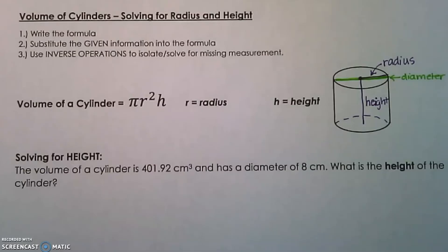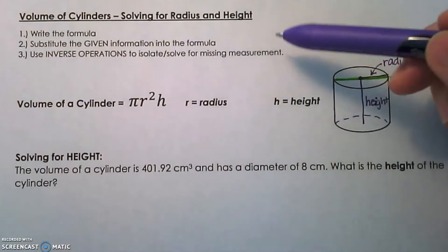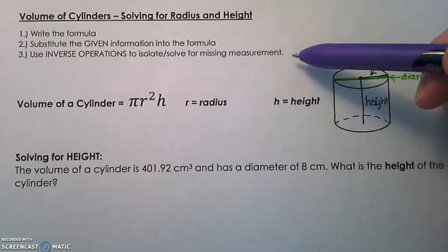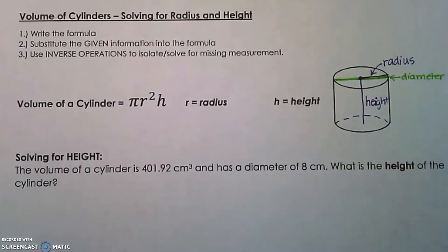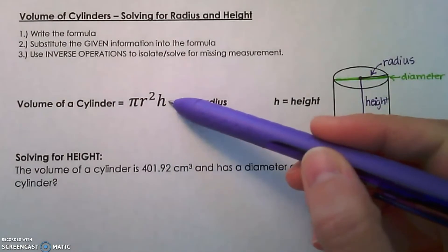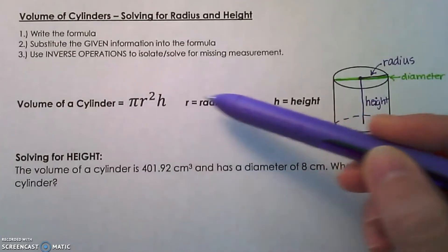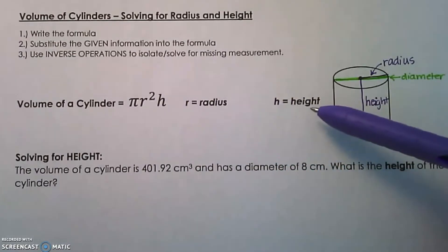So our steps for this process are to first write down the formula, substitute the given information into the formula, and then finally use inverse operations to isolate or solve for the missing measurement. The volume of a cylinder formula is πr²h, r being the radius, h being the height.